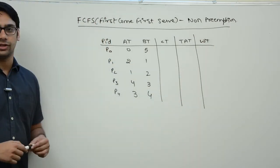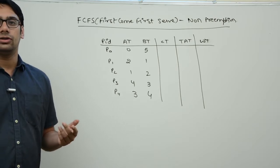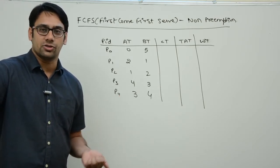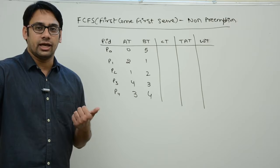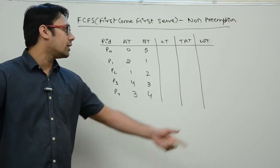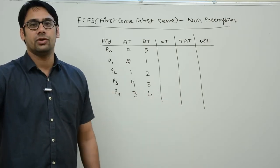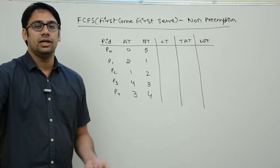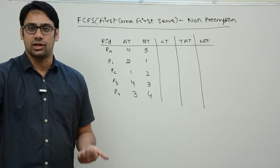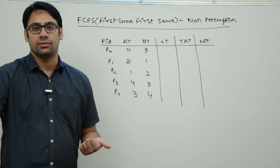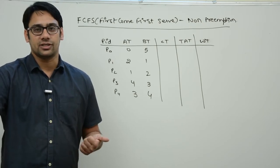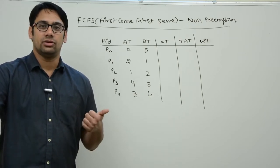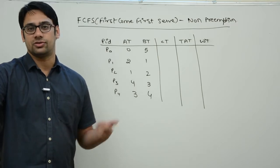In any scheduling algorithm — whether it is FCFS, Shortest Job First, Longest Job First, Round Robin, or Highest Response Ratio Next — our main aim is to minimize the waiting time. If we can minimize waiting time, we can complete more tasks per unit time, which makes the system feel faster, increasing overall throughput.